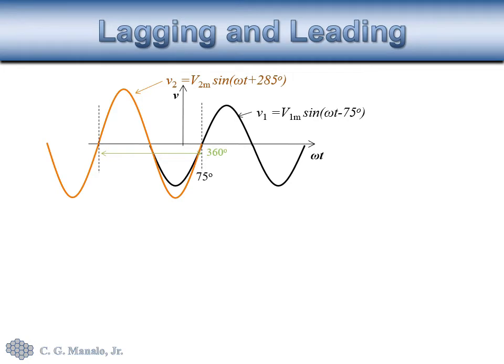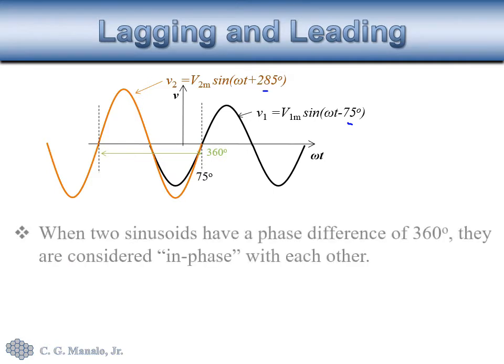Lastly, if the difference between their phase angles is 360 degrees, we also consider these two sinusoids to be in phase with each other.